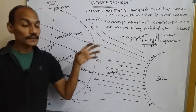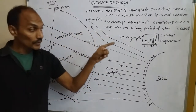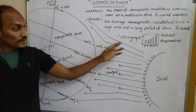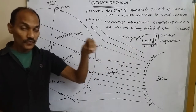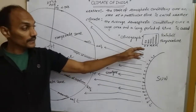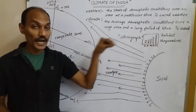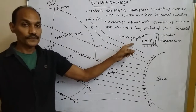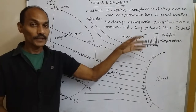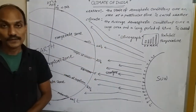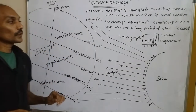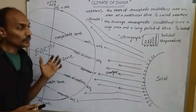Climate graphs show us the minimum and maximum rainfall and temperature. Through climate graphs we can find out which month receives low or high rainfall, and which month has high or low temperature.